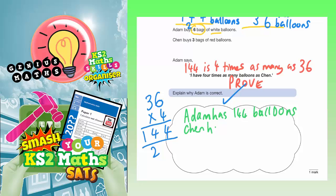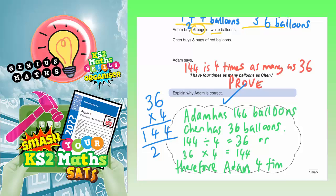Chen has 36 balloons. You can then say that 144 divided by 4 equals 36, or 36 times 4 equals 144. Therefore, Adam has 4 times as many. That will be your answer.